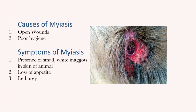Let us now look at the possible causes of myiasis. In the case of canine myiasis, a major cause is the presence of open wounds, which attract many fly species. Another possible cause is poor hygiene, especially in cases where parts of the dog's skin is constantly soiled by urine or faeces.